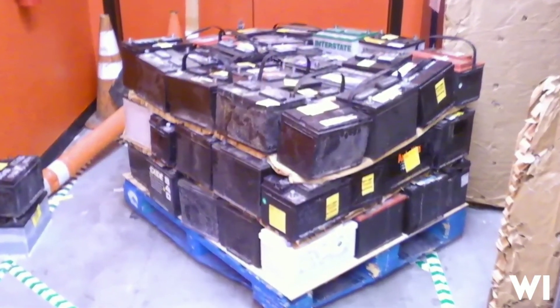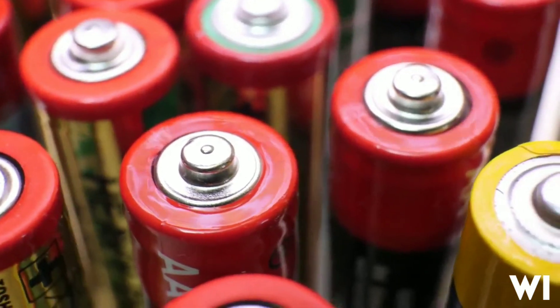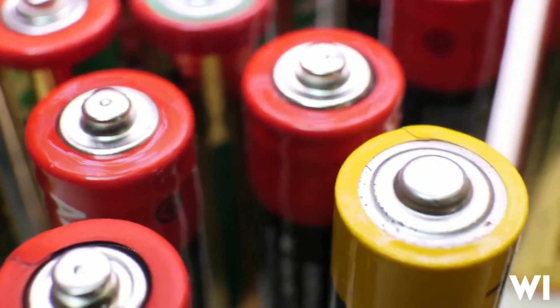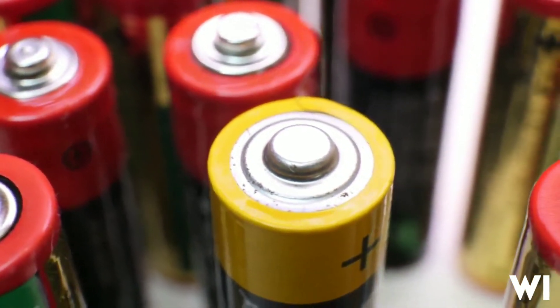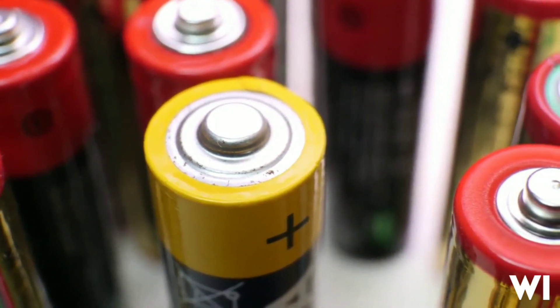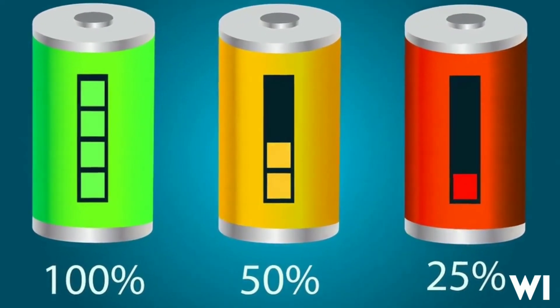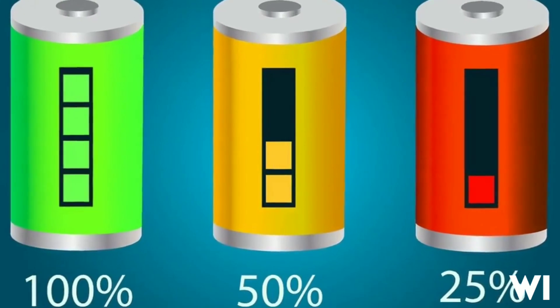History: The term battery was coined by American scientist Benjamin Franklin in 1748 to describe several charged glass plates. The glass plates, known as capacitors, were coated with metal on the surface and were charged using a static generator.